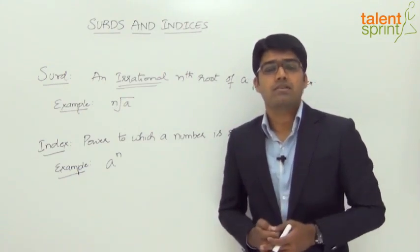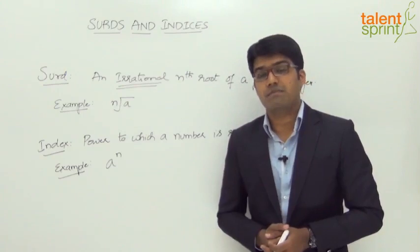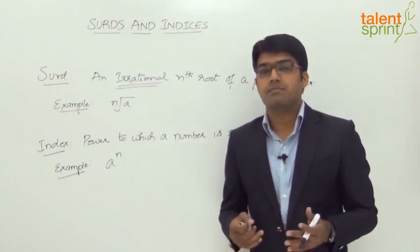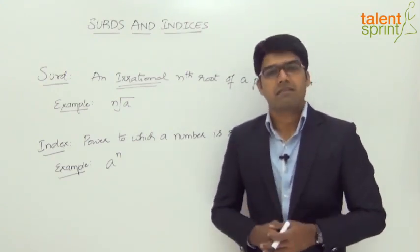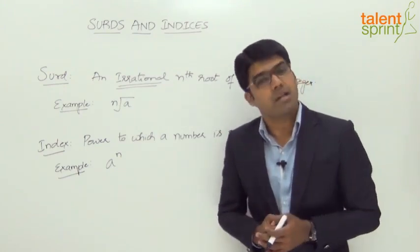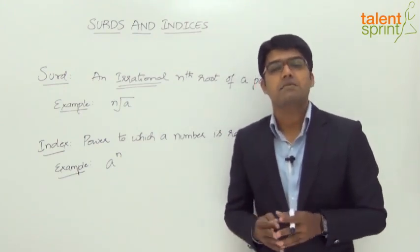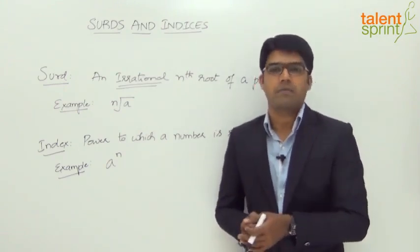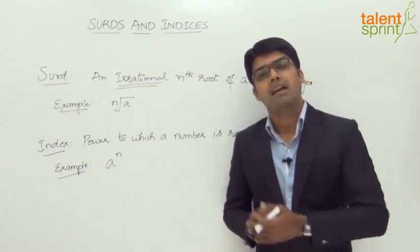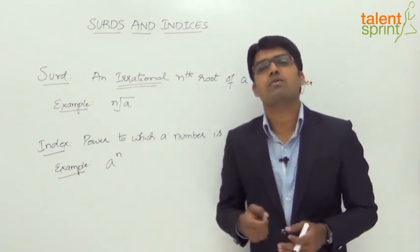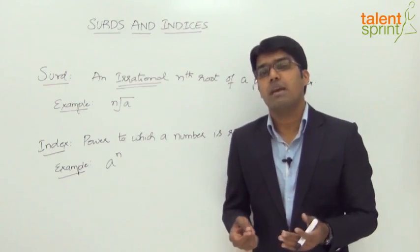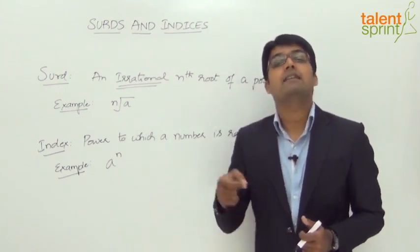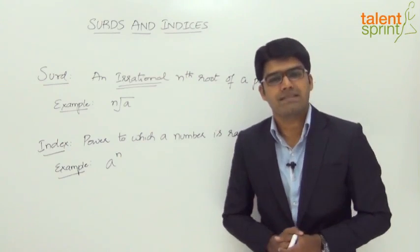For example, square root of 5 cannot be simplified so easily — it is an irrational number. Rational numbers are terminating or recurring, whereas irrational numbers are non-terminating and non-recurring. Since 5 is not a perfect square, square root of 5 is an irrational number. When we simplify, we get a non-terminating and non-recurring number. Such numbers are known as surds.